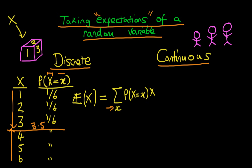We can use intuition here — we don't necessarily need the formula. We know it's going to be halfway between the top and the bottom, so it's going to be between 3 and 4, and in the case of a fair die it's just going to be 3.5. In more complicated problems it might not be so easy to see what the actual expectation is going to be.